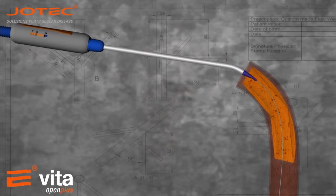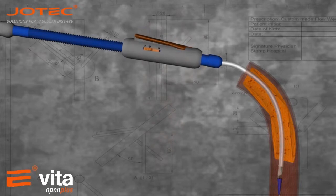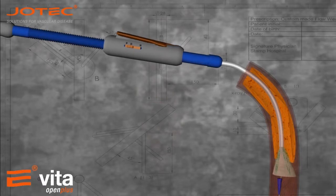Introduction of the Evita Open Plus stent graft. Deployment of the stent graft and anchoring to the aorta with polypropylene 2-0 or 3-0 sutures.